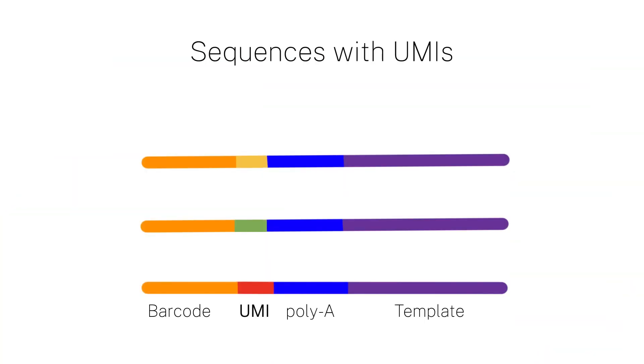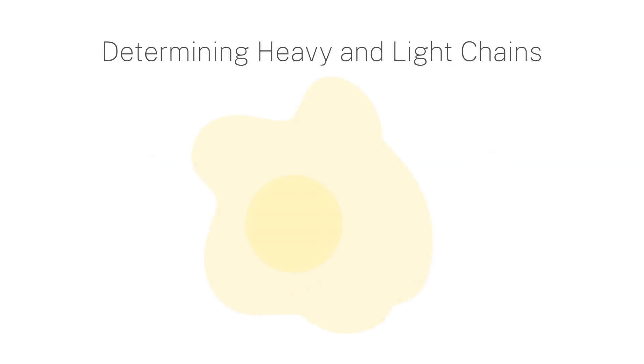Unlike barcodes, UMIs are random, making them very useful as a unique identifier for each mRNA read. In quantitative analyses, UMIs can determine the expression levels of different proteins. In the case of antibody discovery, these are the heavy and light chains within a single cell.